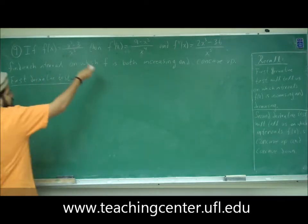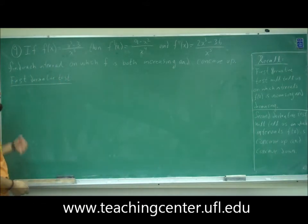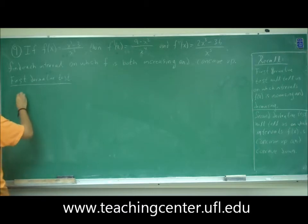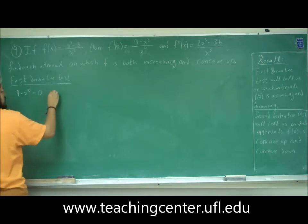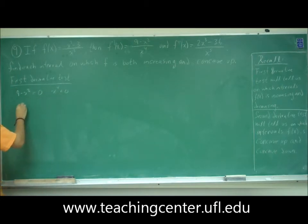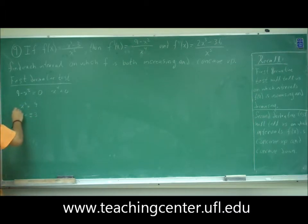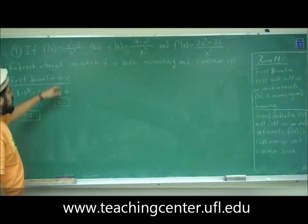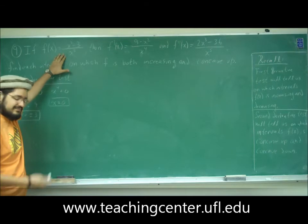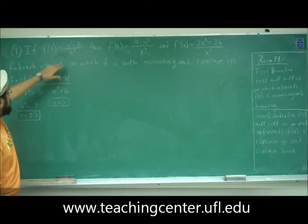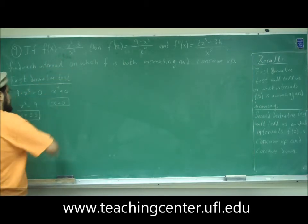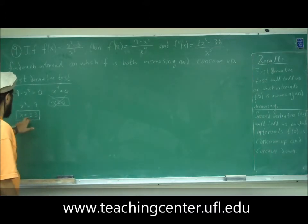Let's apply the first derivative test. We don't even need to find the first derivative — they give it to us. All we need to do is evaluate when it's zero and when it's undefined. Setting the numerator equal to zero: 9 - x² = 0, so x² = 9, meaning x = ±3. The denominator gives x⁴ = 0, so x = 0. We need to check these possible critical numbers in the original function. Plugging in zero makes the original function undefined, so zero is not a critical number.